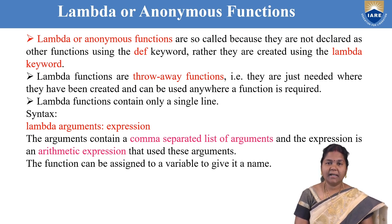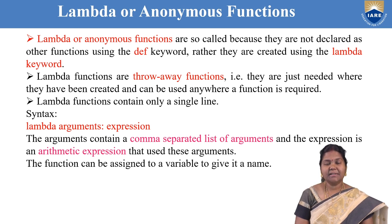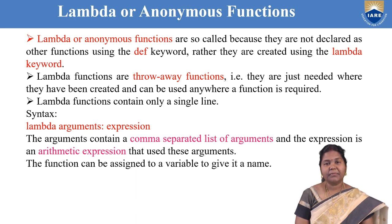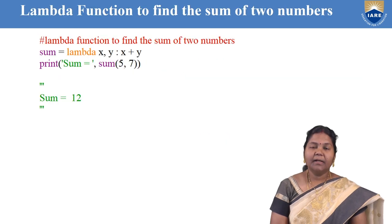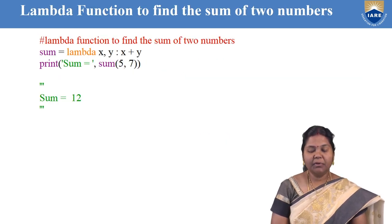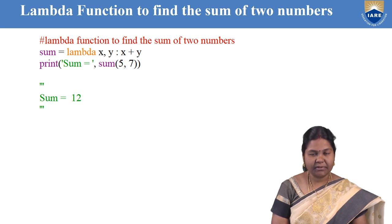The arguments contain a comma-separated list of arguments and the expression is an arithmetic expression used with those arguments. The lambda function can also be assigned to a variable to give it a name. Let us see some examples of how to use lambda functions — starting with an example to find the sum of two numbers.